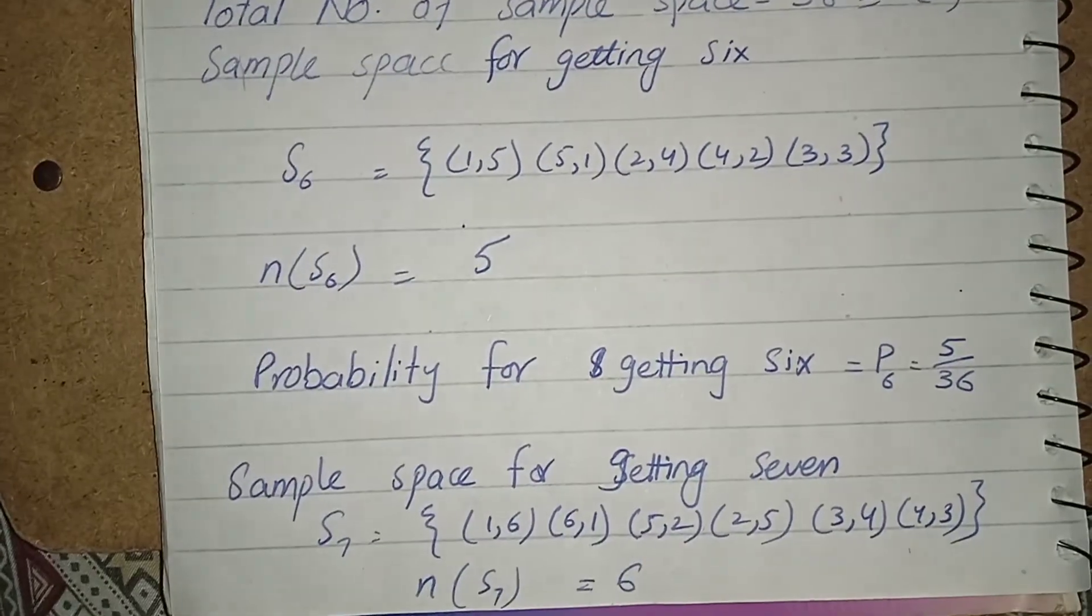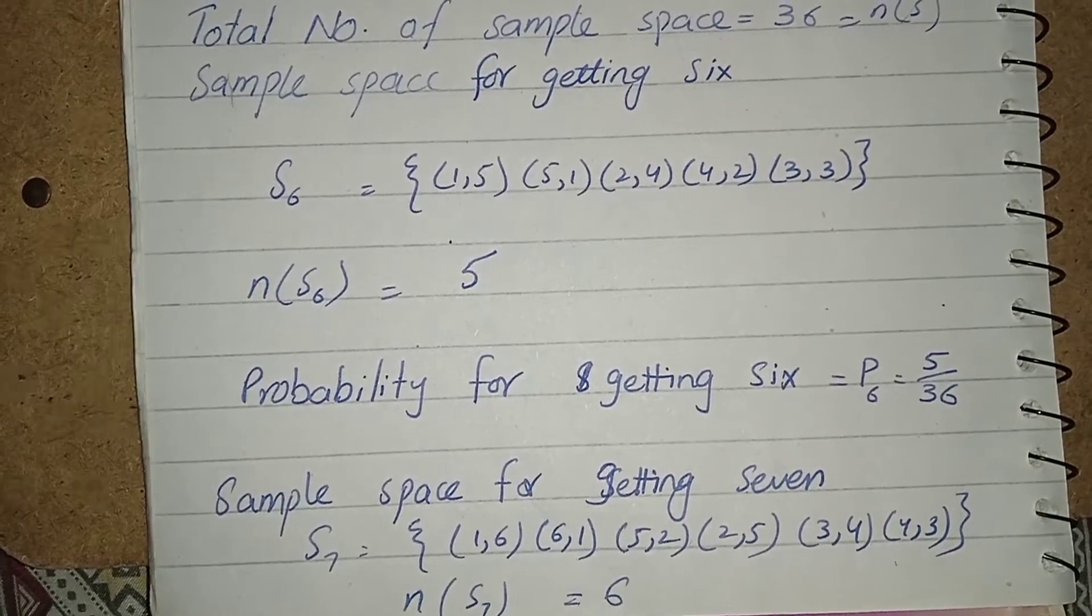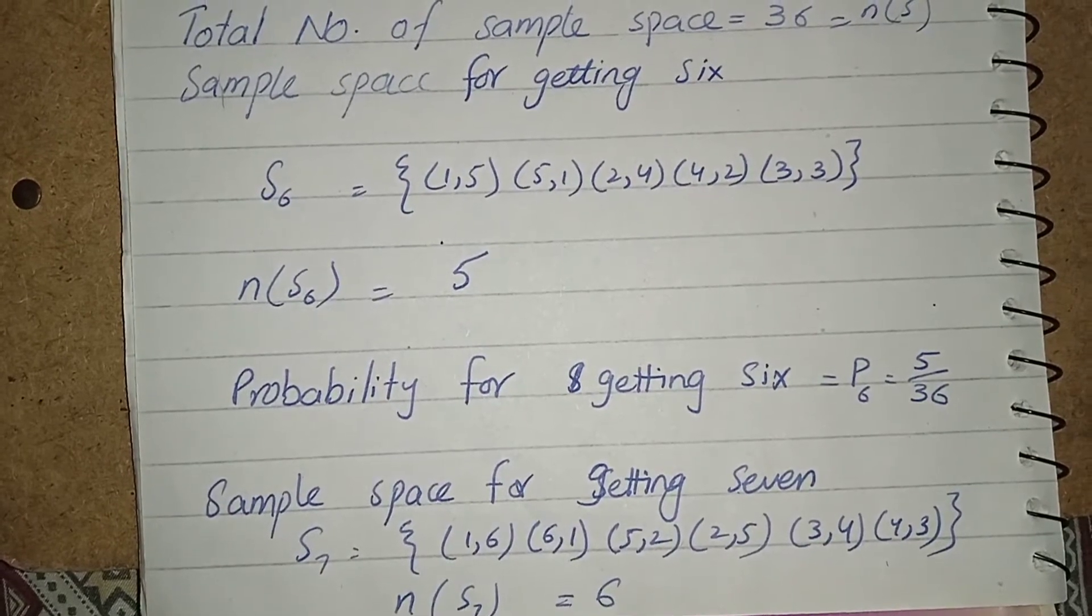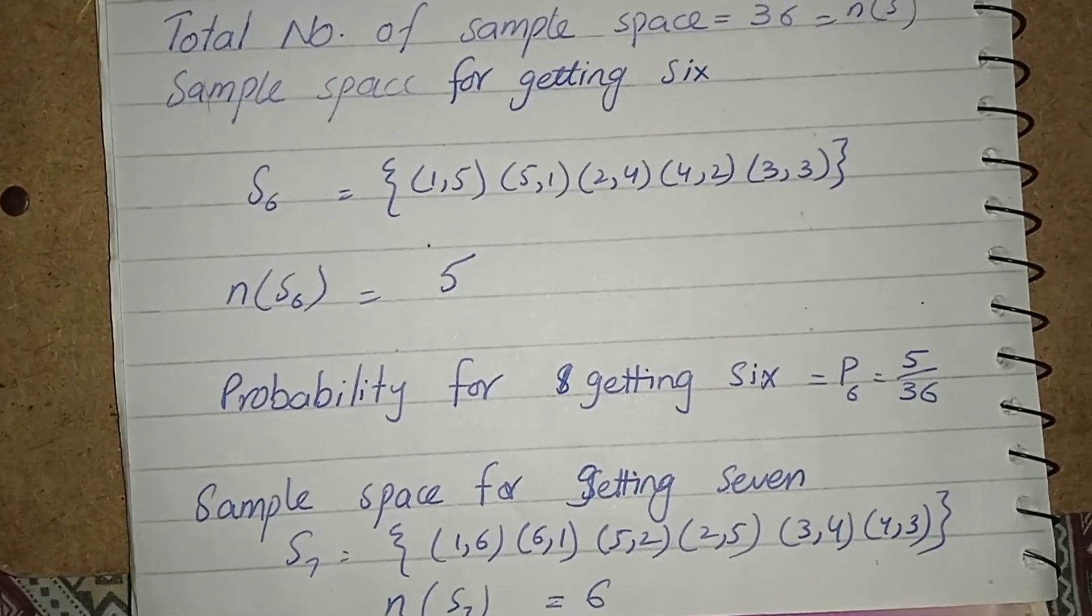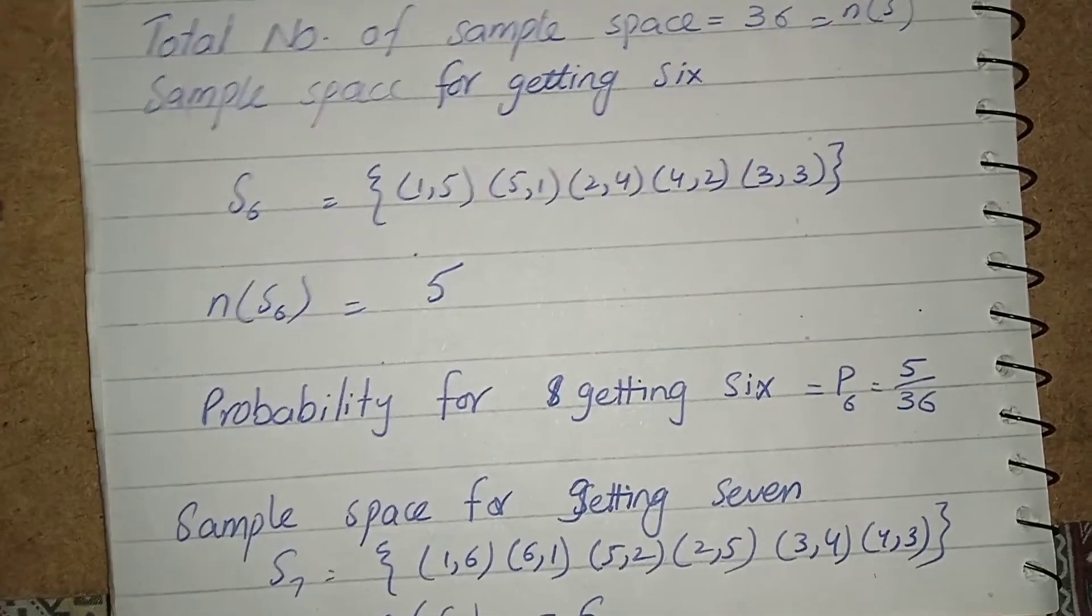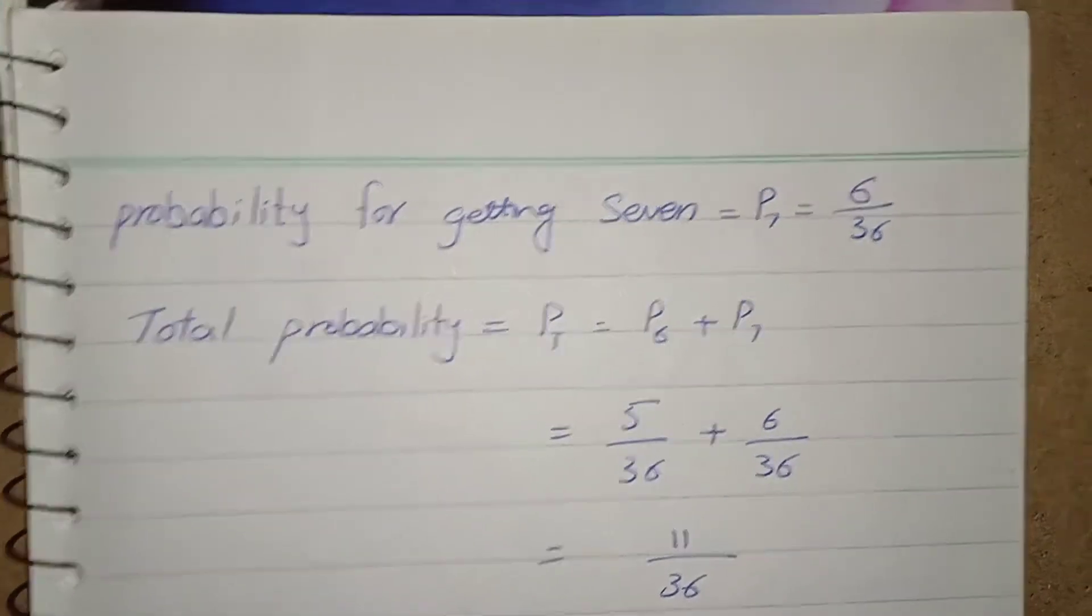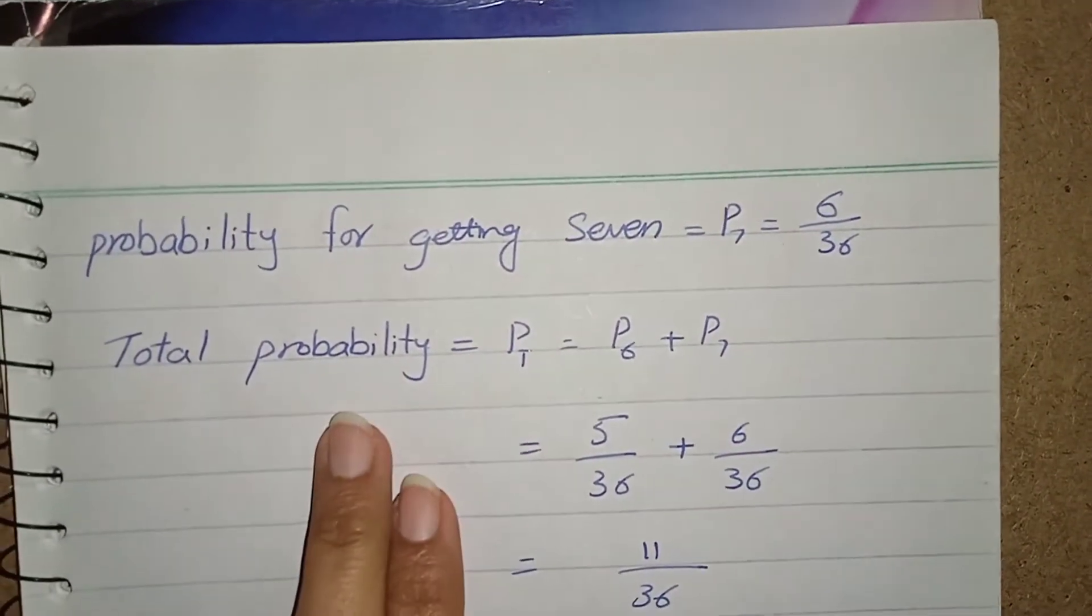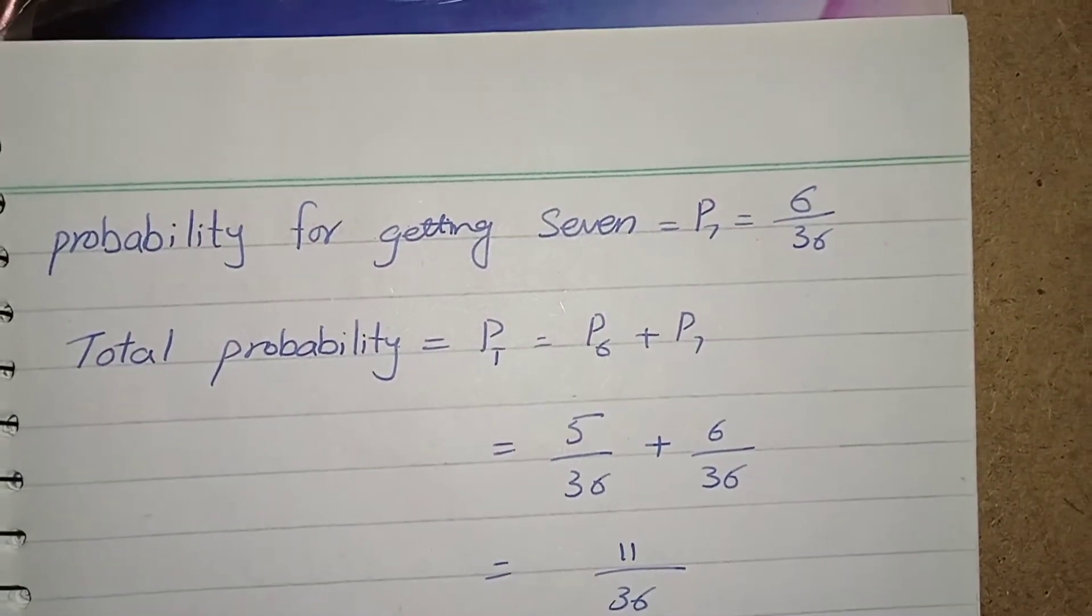And after that I separate out all the sample spaces which gave us the output 7, and this time the number of space for 7 output is 6, so the probability would be 6 over 36. But this step you have to do when the events are mutually exclusive.